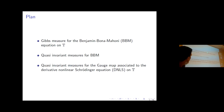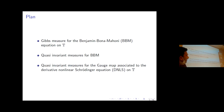For the Benjamin-Bona-Mahony equation, the first part is classical — it's just Bourgain's method, an adaptation of an argument due to Bourgain in the context of the nonlinear Schrödinger equation. The second part is more modern: the concept of quasi-invariant measure for BBM, and then the gauge map which is a change of variables important for the nonlinear Schrödinger model.